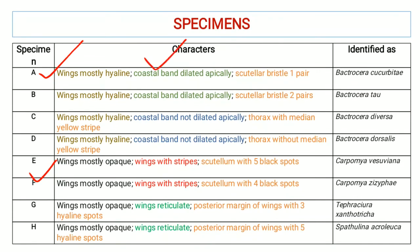Within the specimens that have hyaline wings, there are two further characteristics: costal bands dilated apically, and costal bands not dilated apically. Within the dilated apically category, there are specimens with a scutellum having one pair of bristles and specimens with scutellum having two pairs of bristles. Specimens with hyaline wings, costal bands dilated apically, and scutellum with one pair of bristles are Bacterocera cucurbitae, and those with two pairs of bristles are Bacterocera tau.